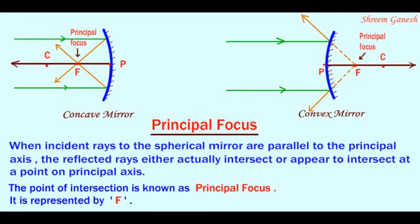Case 2: Convex mirror. When incident rays to the convex mirror are parallel to the principal axis, the reflected rays appear to intersect at the principal focus.